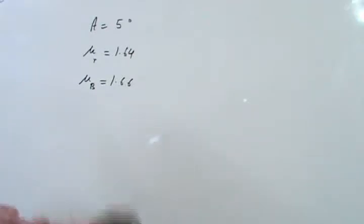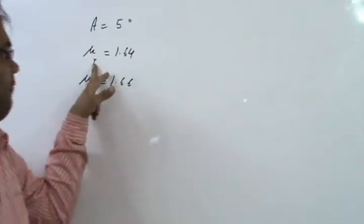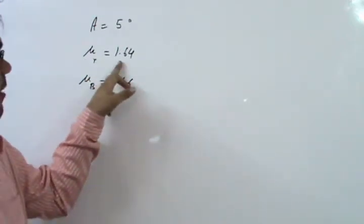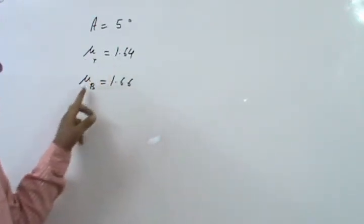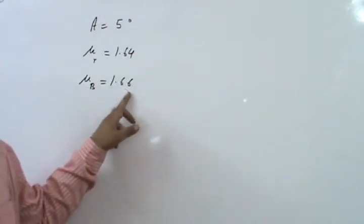This question I am doing here. A prism has an angle of 5 degrees. The refractive index for red light is 1.64 and the refractive index for blue light is 1.66.